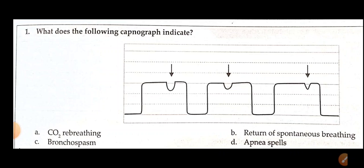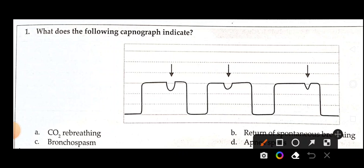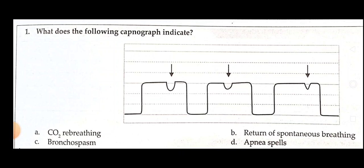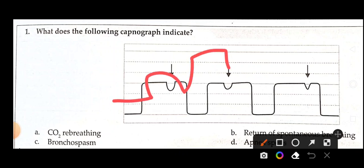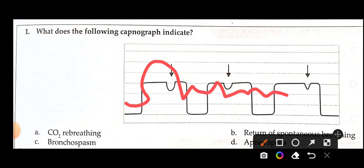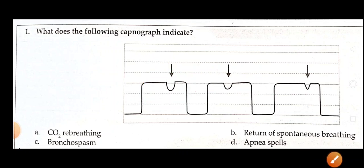What does the following capnography indicate? Options: CO2 re-breathing, return of spontaneous breathing, bronchospasm, or apnea spells. The answer is return of spontaneous breathing — this temple-like pattern. A sharp fin pattern is for bronchospasm, a rising baseline graph indicates malignant hyperthermia, and an absent waveform pattern indicates esophageal intubation. Capnography graphs are very important.